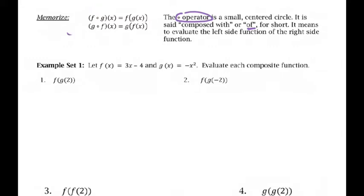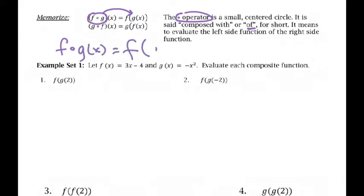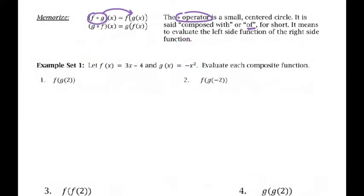So we are going to take this notation right here. A lot of times instead of writing f and then a little circle — because it kind of looks like 'fog' — we write f of g of x. I don't usually say 'f is composed with g of x'; I say 'f of g of x.' And then g of f of x would go the other way. So let's go ahead and investigate how we do that.